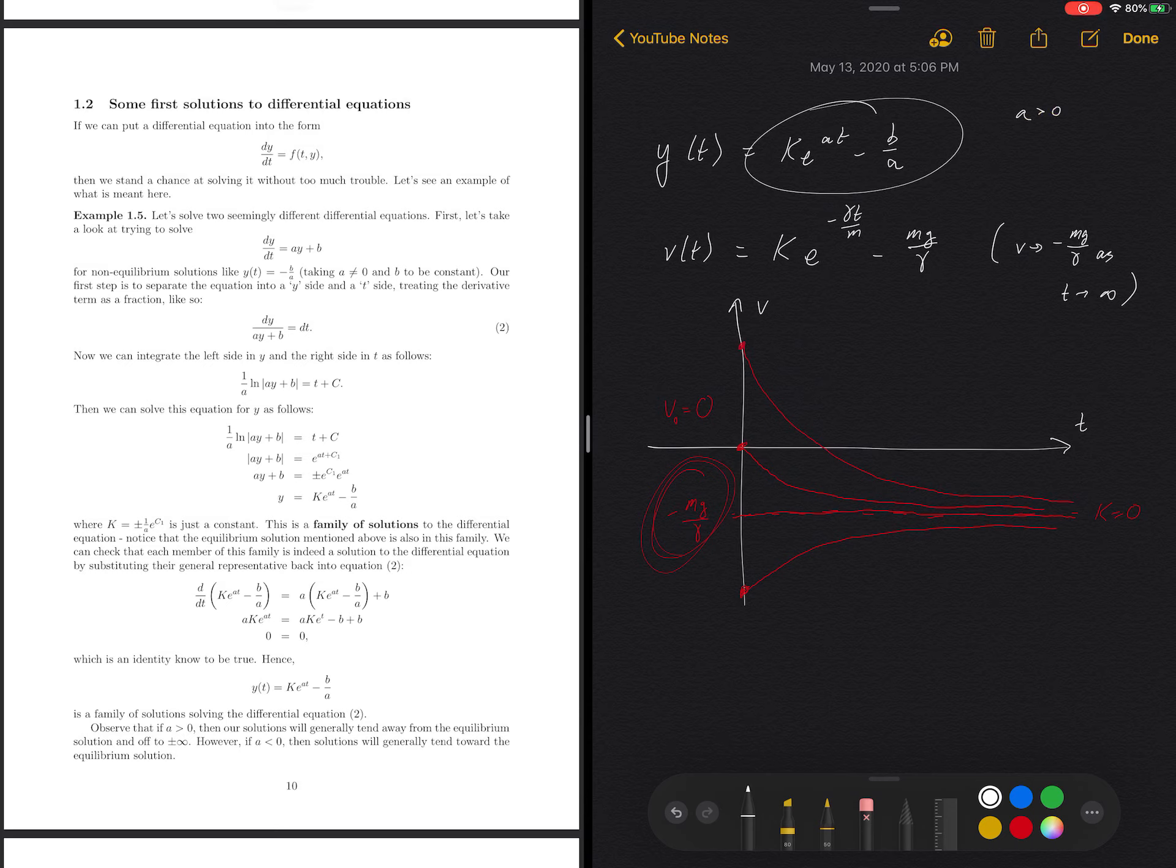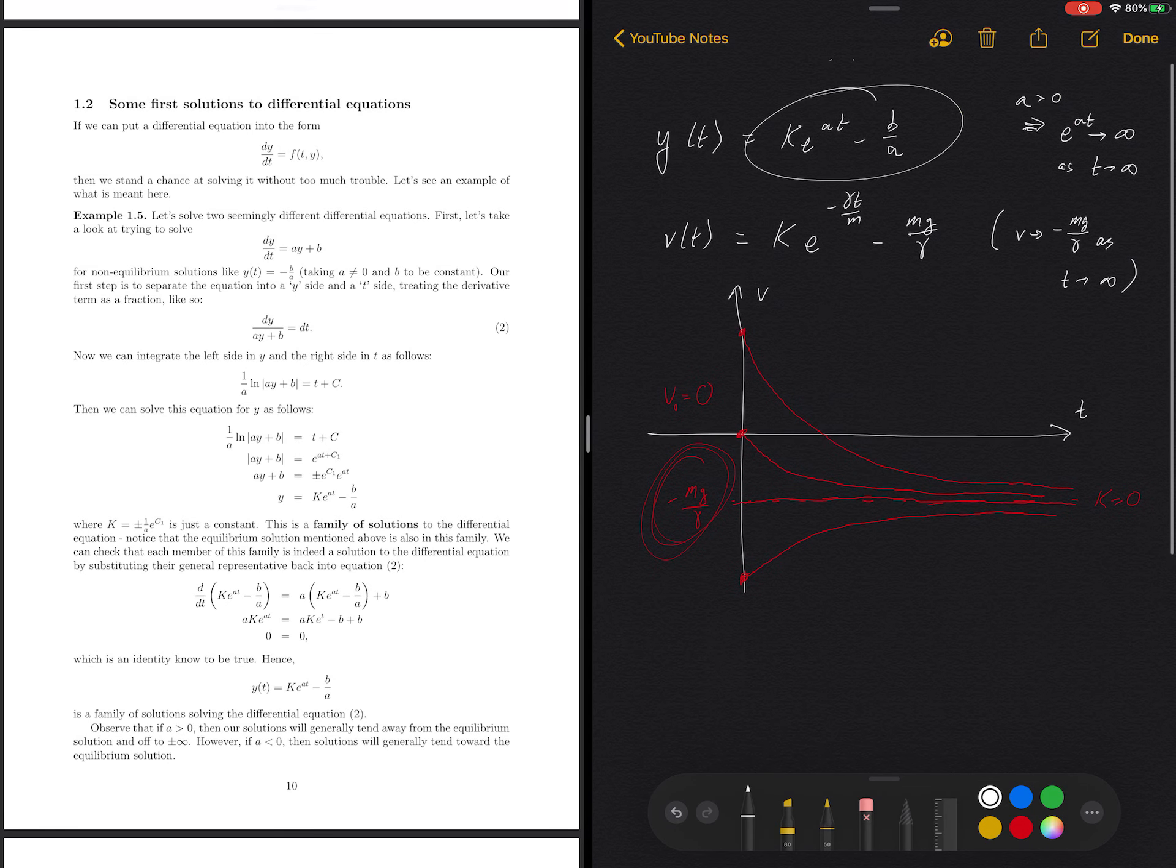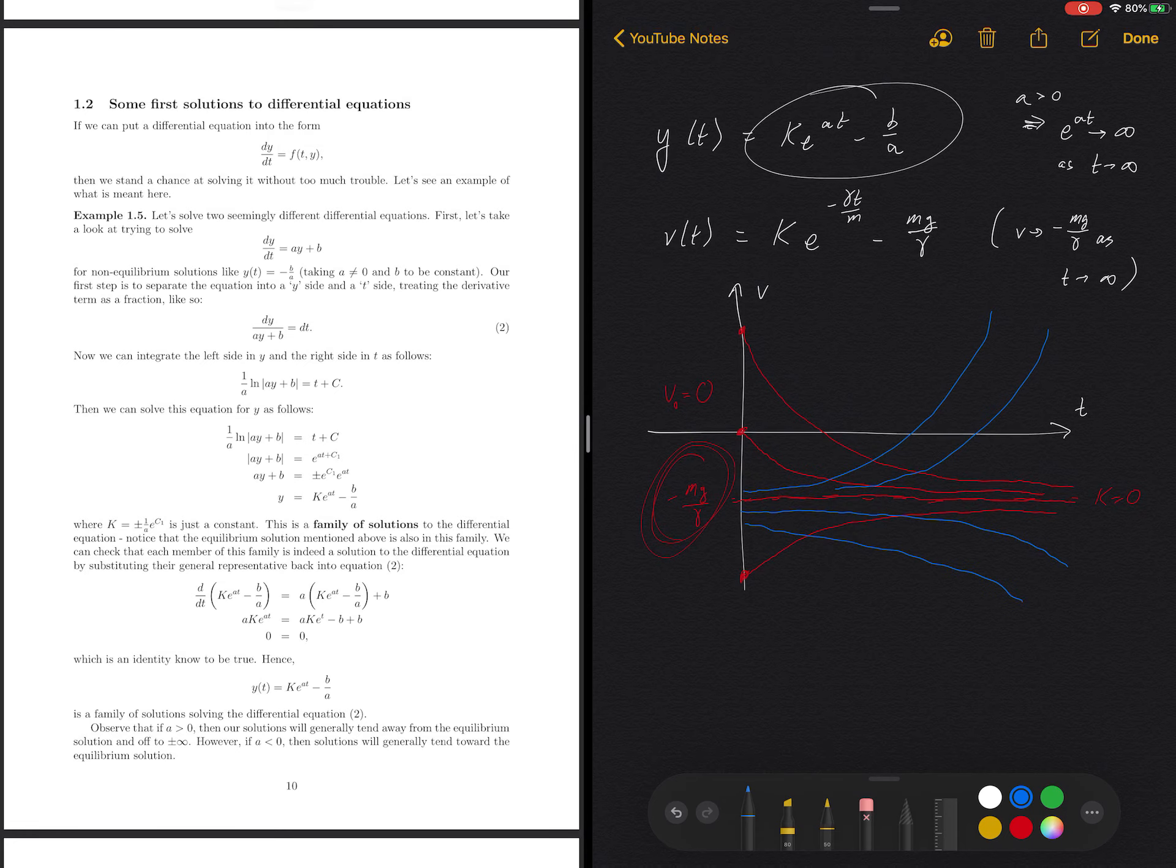Well, then no longer do we get this nice equilibrium solution that we want to tend toward. No, if a is greater than zero, then that would imply, that's what this arrow means, it implies that e to the at goes to infinity as t goes to infinity, which means that we're not going toward the equilibrium solution. Instead, we would be traveling away. And that has everything to do with a topic called stability,